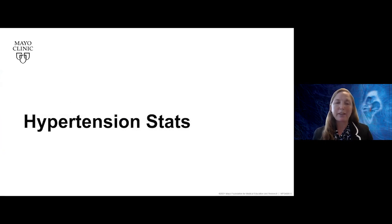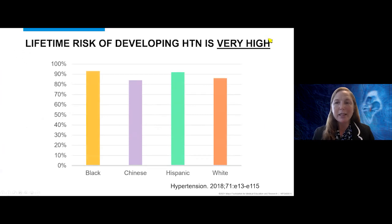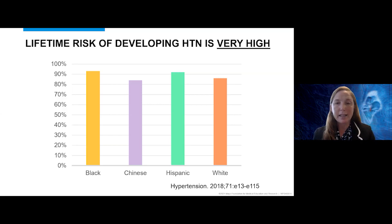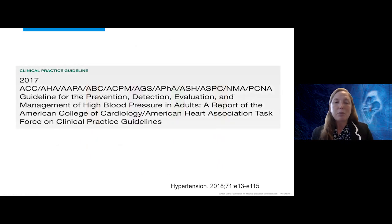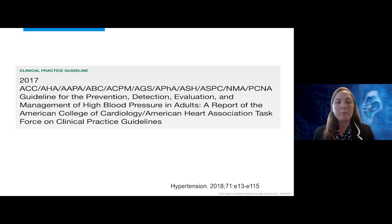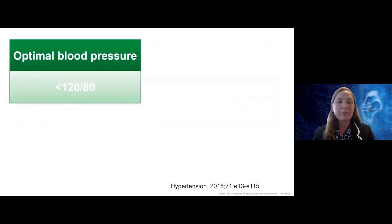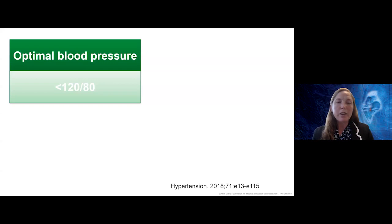We'll start with some background hypertension statistics. The lifetime risk of hypertension is very high. When you look over the course of the lifespan, it's somewhere between 80 to upwards of 90%. The most recent practice guidelines from ACC and AHA were from 2017 for the treatment and detection of blood pressure in American adults, focusing on the cut point where hypertension was defined as 130 over 80. No one argues that an optimal or normal blood pressure is less than 120 over 80.